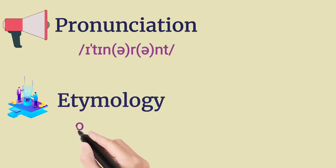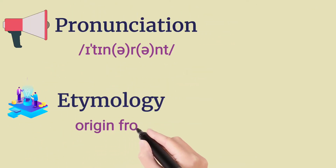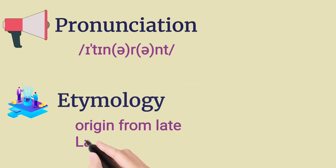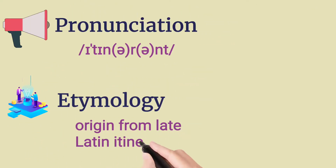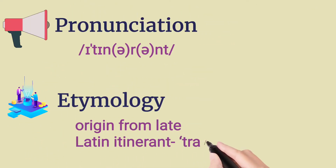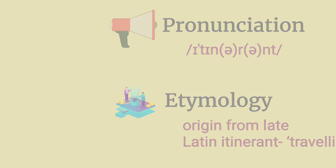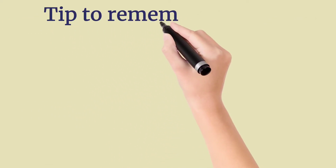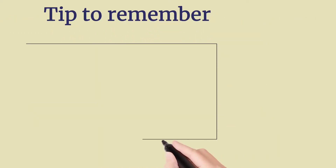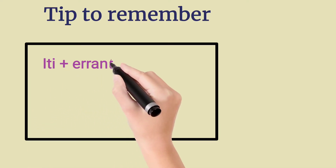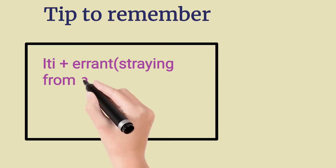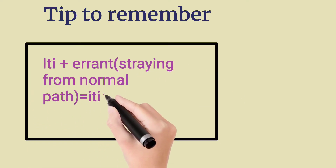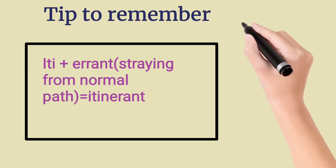The pronunciation is itinerant, and it was originated from the late Latin word itinerant, which means traveling. The tip to remember the word is: iti plus errant, which means straying from normal path, equals itinerant.